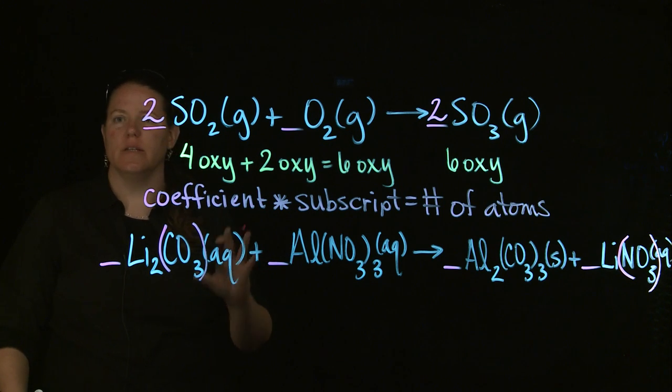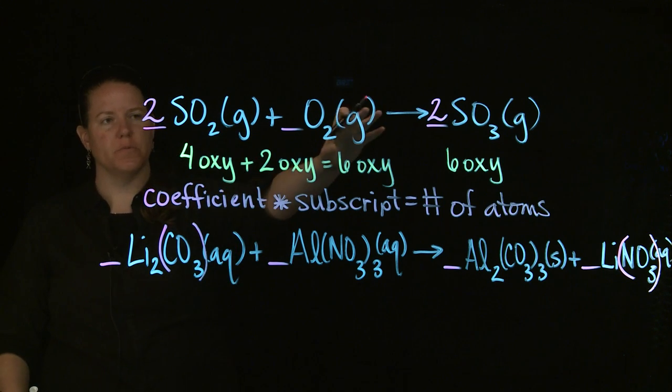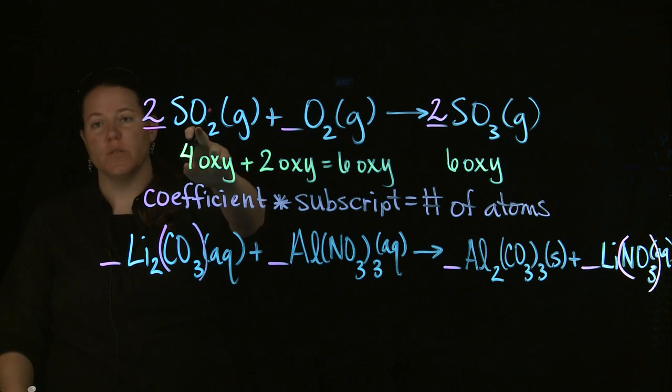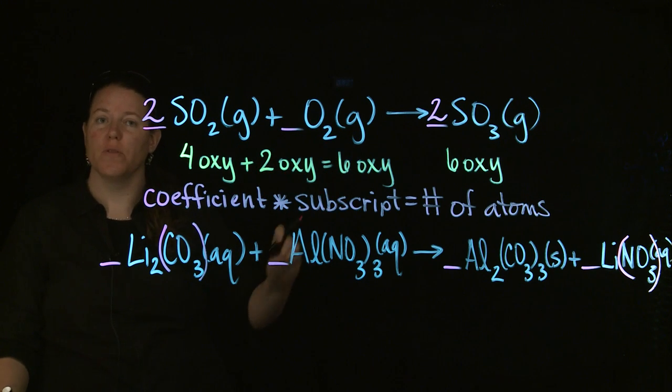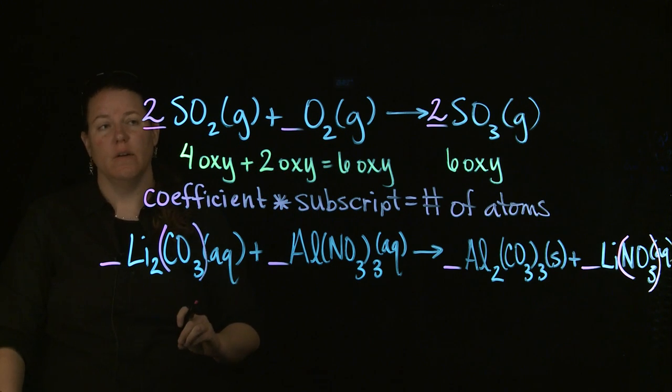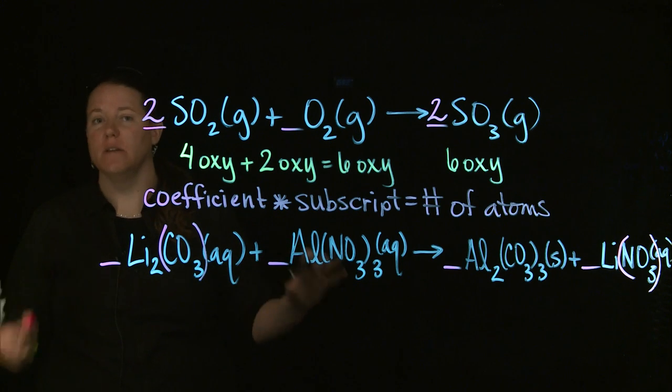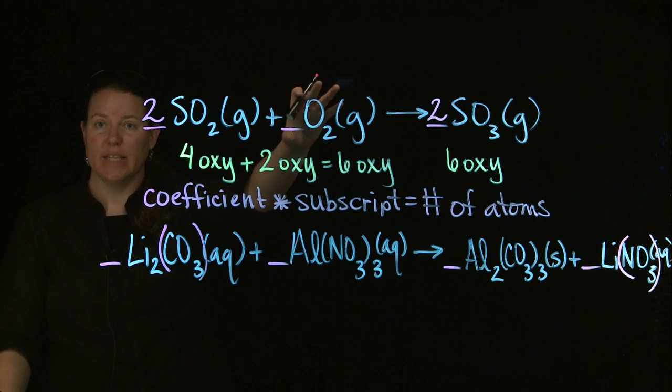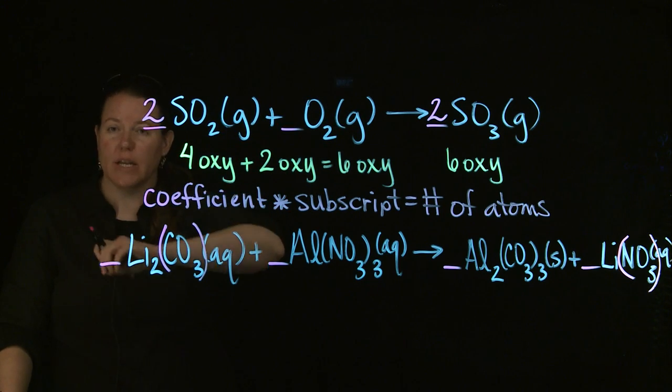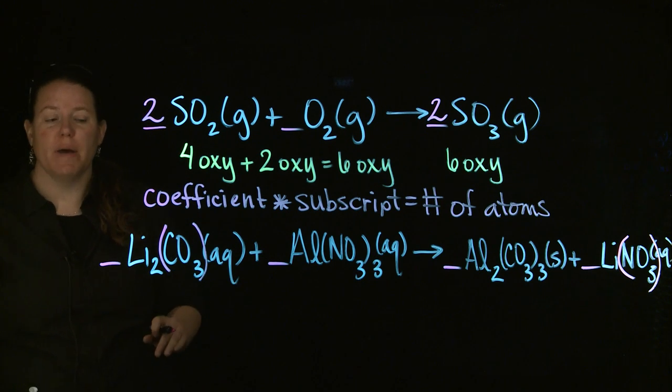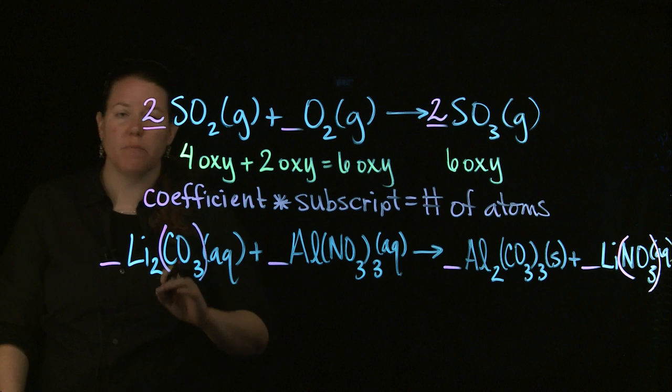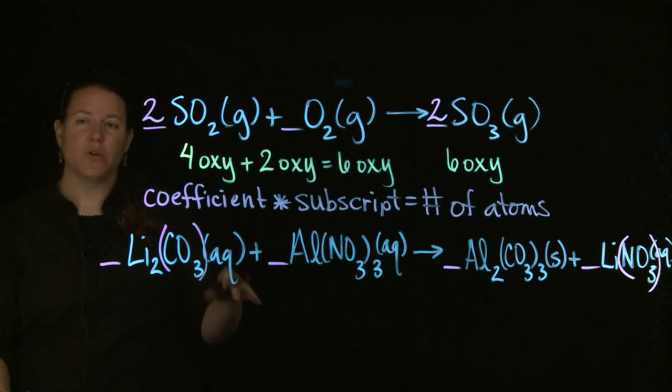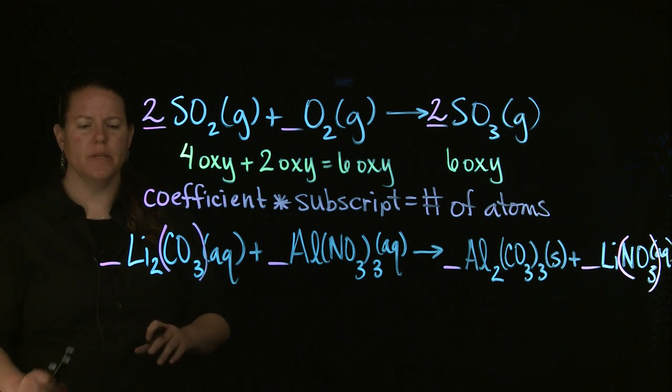So one of the tricks is not to start with an element that exists in more than one place on one side and hope that by doing some other things it would work out. The second thing was to, if you do have to deal with that, increase the beginning number by one and see if you can rebalance it. Here, the trick is if you have the same polyatomic ion on both sides, then balance according to the polyatomic ion.